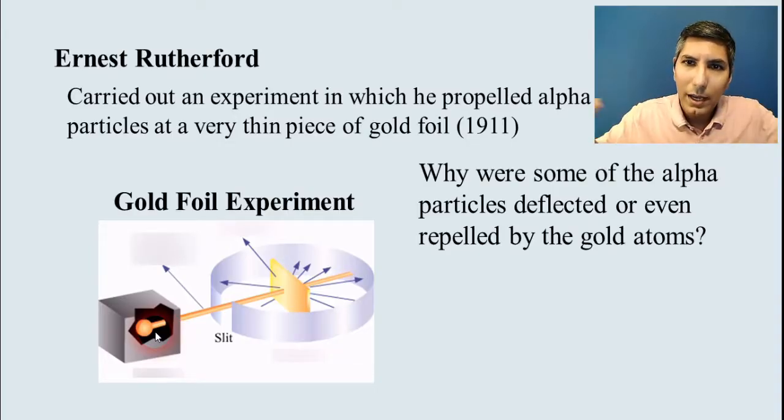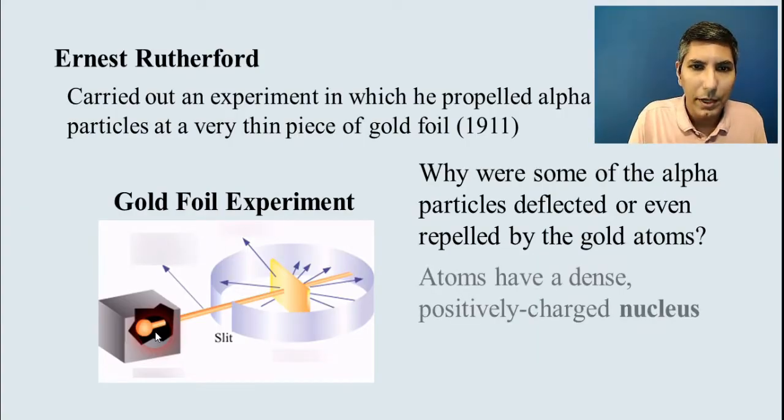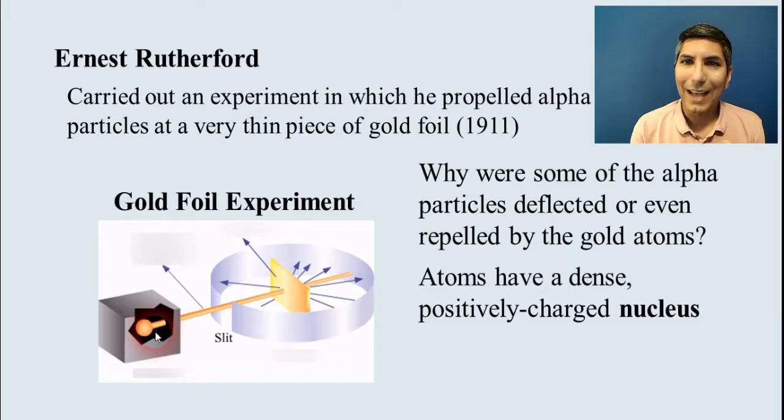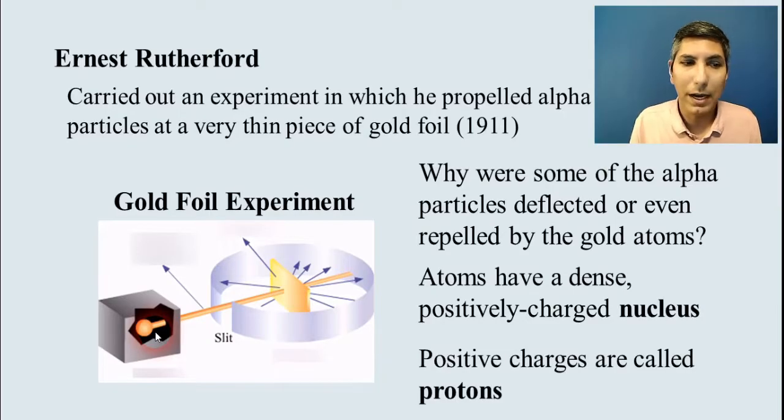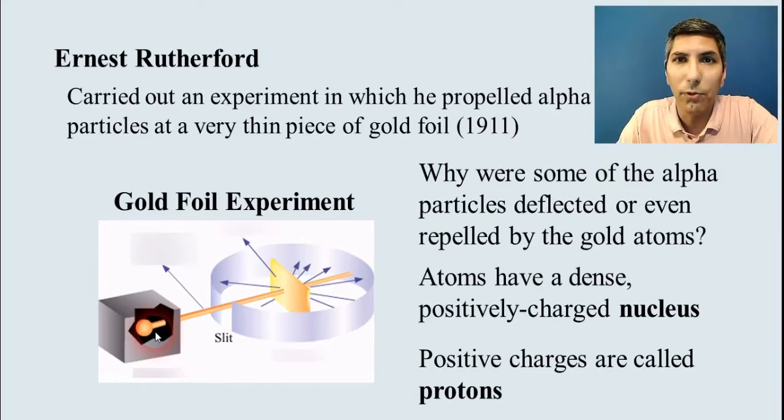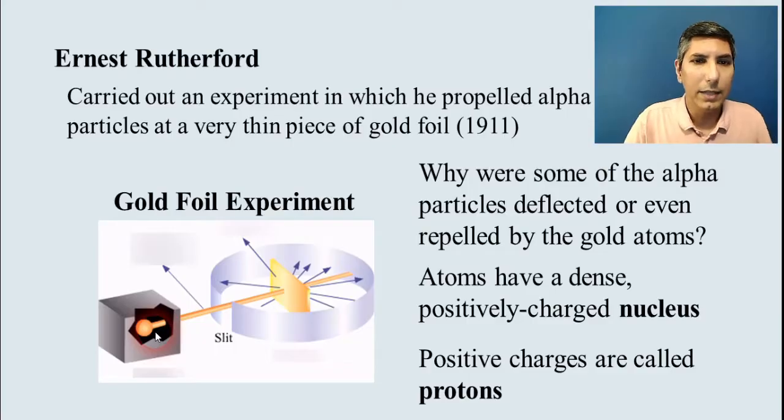And so that's why there was that reflection or that deflection in the gold foil experiment. He realized that inside each one of those gold atoms there had to be something that was very dense, something that was positively charged. He called that the nucleus. And he called those positive charges inside the atoms protons. And so this gold foil experiment was an excellent way to demonstrate that there are protons and they're in this very dense nucleus of the atom.